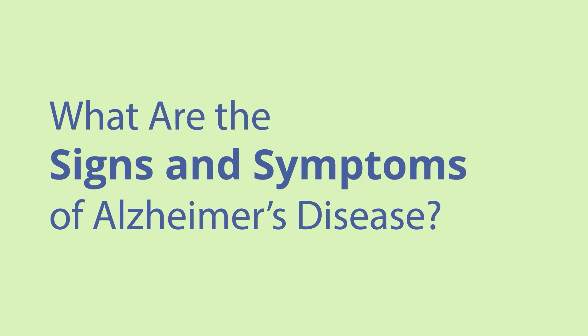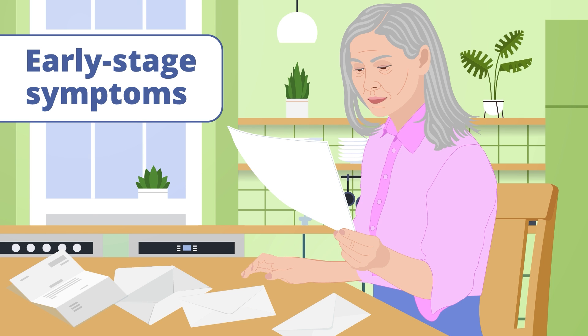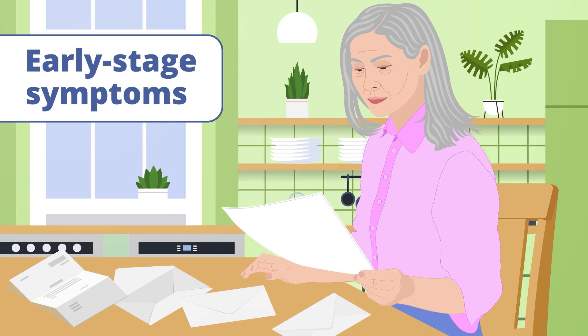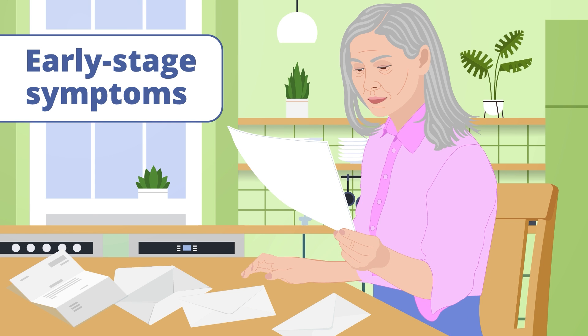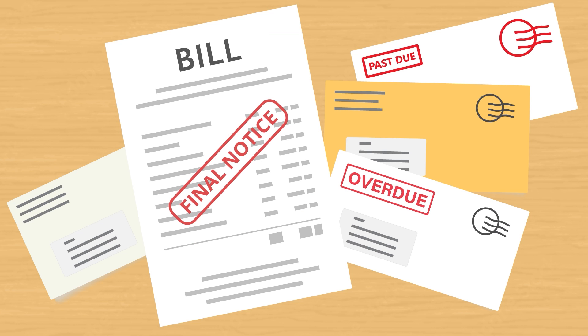What are the signs and symptoms of Alzheimer's disease? Early stage symptoms: Alzheimer's symptoms vary from person to person and change as the disease worsens over time. People in the early stages of the disease may find it hard to remember things, ask the same questions repeatedly, have trouble paying bills and working with numbers, get lost on familiar routes, or lose things or put them in odd places.